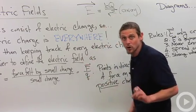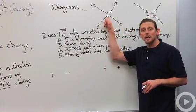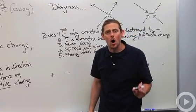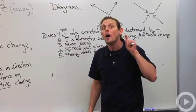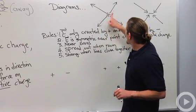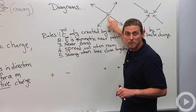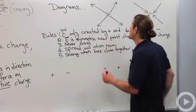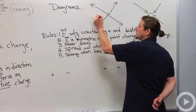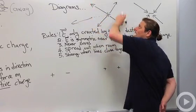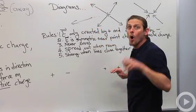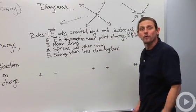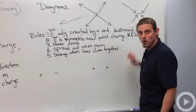Let's look at some electric field diagrams. For a positive charge sitting alone, the electric field points away from it, because any positive test charge would be repelled. It's symmetric around the positive charge in all directions — three dimensions, though I've only drawn two. For a negative charge, positive test charges are drawn toward it, so the electric field for a negative charge points toward the negative charge.